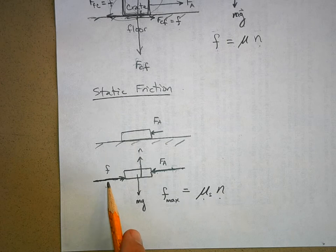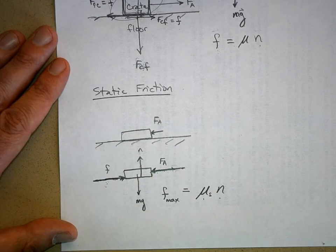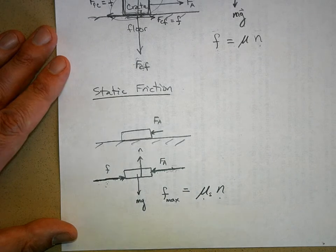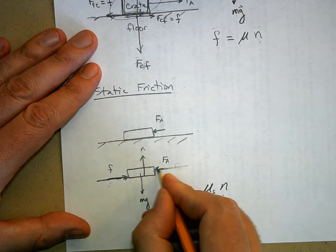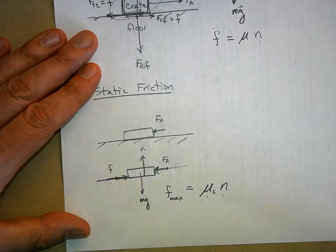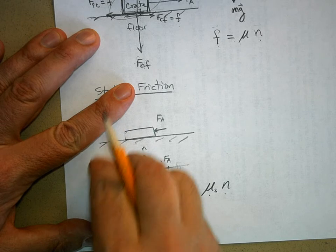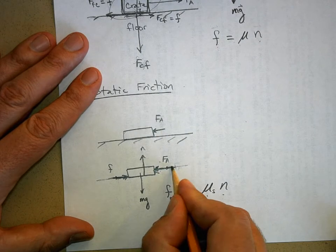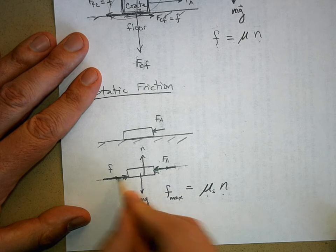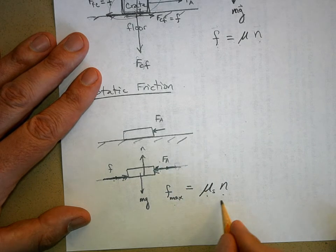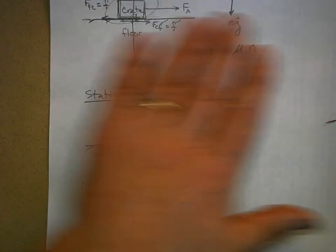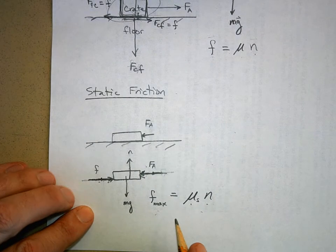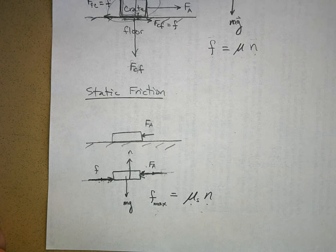Of course, the static friction can be less than its maximum — it's just going to be what it needs to be to cancel out that applied force. If the applied force is really small, then the force of friction is only going to be that big. But if I push harder, this arrow will be longer. This arrow will match this arrow until you get to this maximum. Quite often we'll solve problems to determine the maximum possible force of static friction.